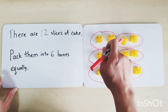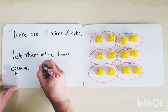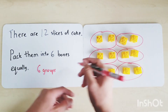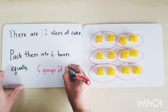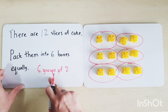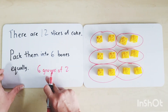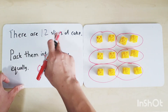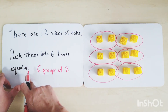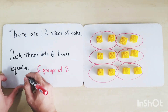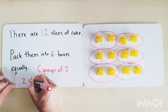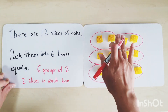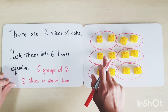Each box or group has two slices of cake. There are six groups of two. So if we pack 12 slices of cake into six boxes equally, they will have two slices in each box. Two slices in one box, two slices in another box, and so on.